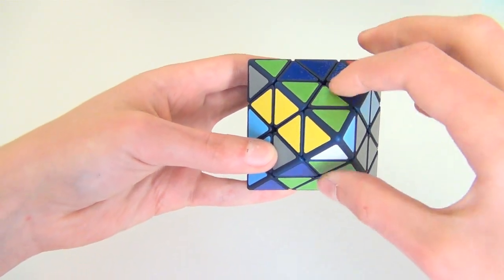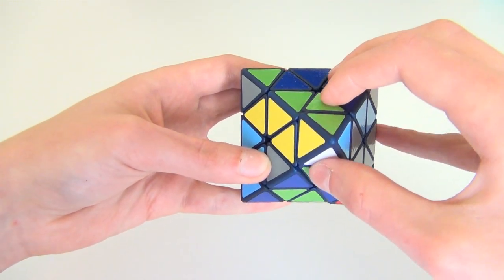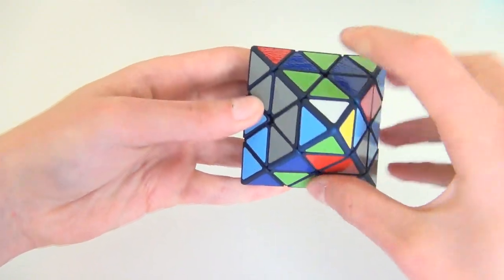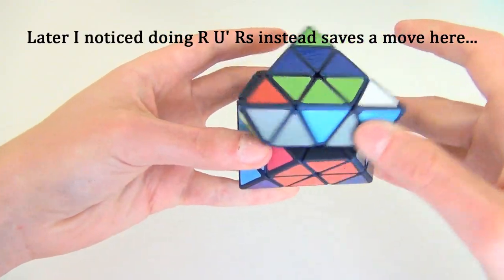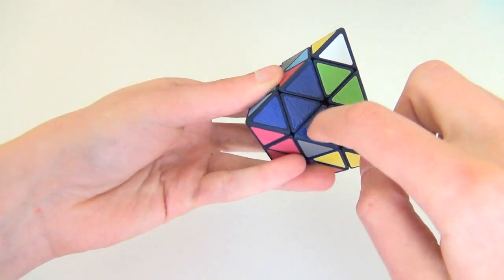So we can do U, let's bring it here, then R U RS, and that matches it up. U' RW', so now we have this done.